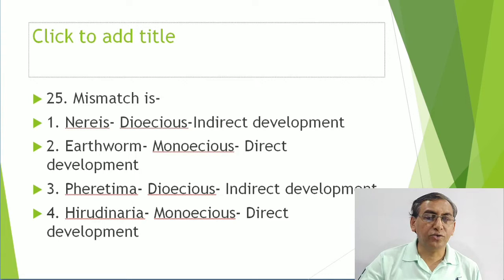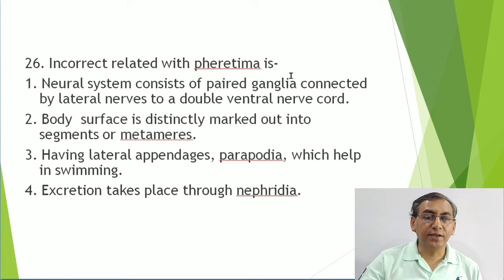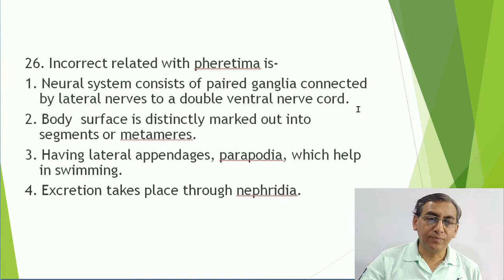Pheretima (earthworm) is monoecious. Incorrect related to Pheretima: neural system with paired ganglia - correct; connected by lateral nerves to double ventral nerve cord - correct; body surface divided into segments with metameres - correct.